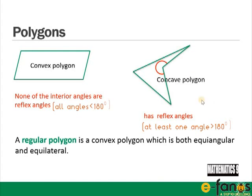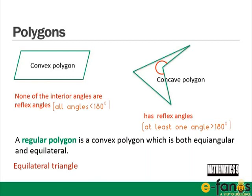A regular polygon is a convex polygon which is both equiangular and equilateral. Equiangular means all angles are exactly the same size, and equilateral means all sides are exactly the same length. An equilateral triangle is regular. A square is regular. A rhombus is equilateral but not equiangular, so it's not regular. A rectangle is equiangular but not equilateral, so it's not a regular polygon.